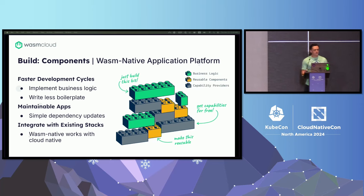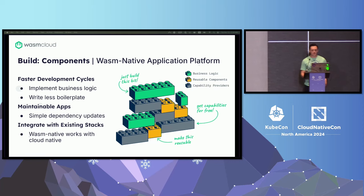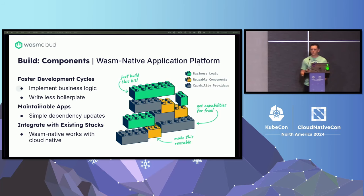Building wasmCloud applications is simple. Developers write business logic in a source language like Go, Rust, or TypeScript using a set of common APIs like database connectors, HTTP, system APIs, or even custom interfaces. This keeps the maintenance of your application purely to just writing functional logic, and the faster development cycles lead to a quicker path to production.